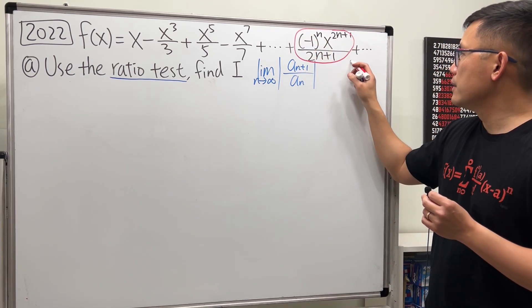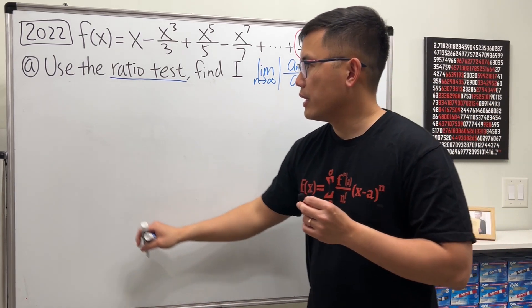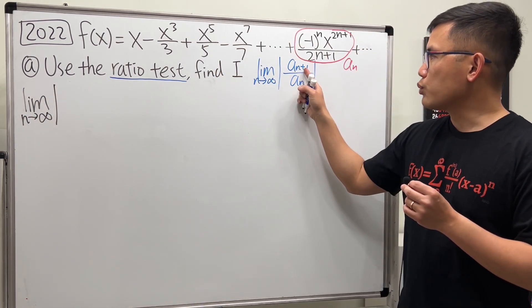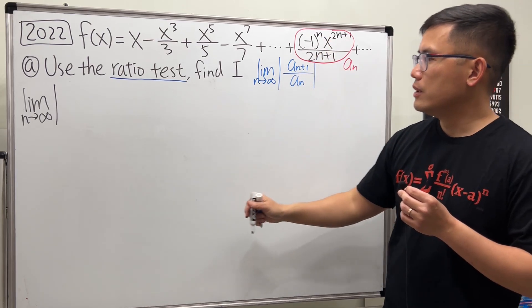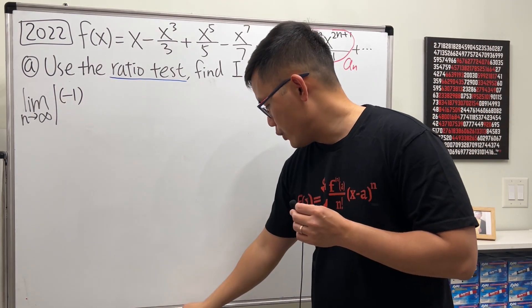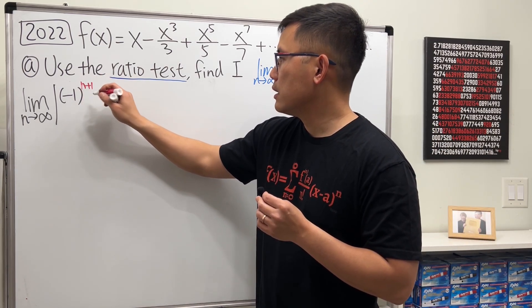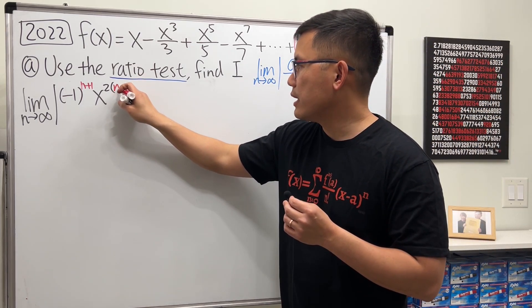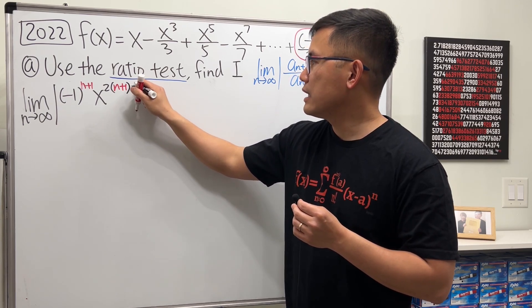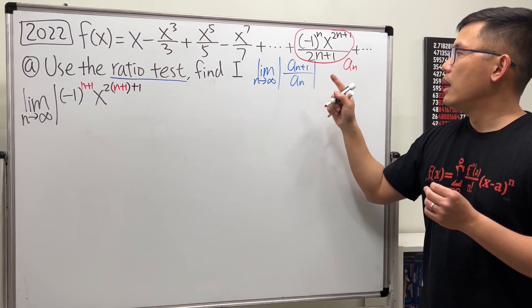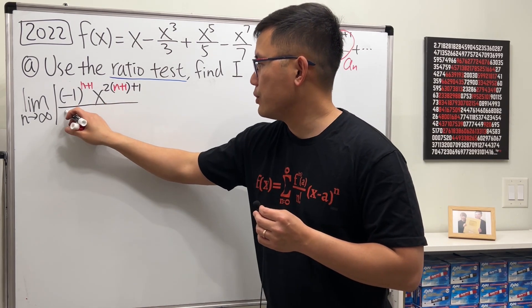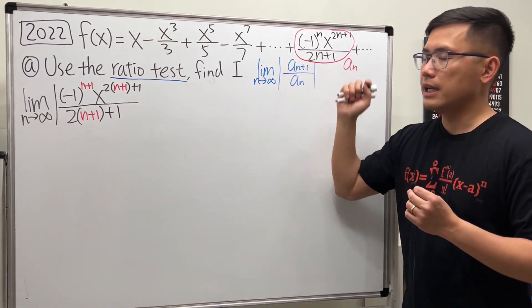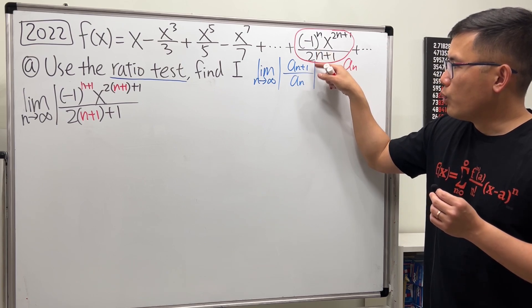Let's get to work. For a_{n+1}, we substitute n+1 into all the n's. So we have negative 1 raised to the n+1 power, times x raised to the 2 times (n+1), and on the bottom we have 2(n+1) plus 1. This gives us the expression for a_{n+1}.